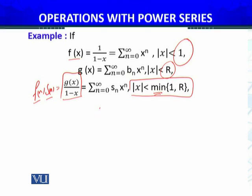We discussed that s_n equals summation r equals 0 to n of a_r times b_(n-r). Now a_r is 1 for this series.